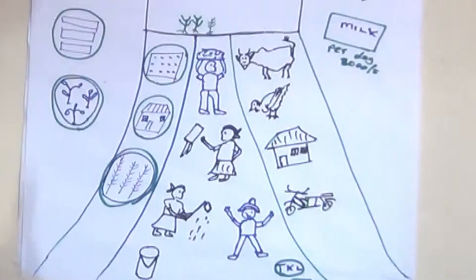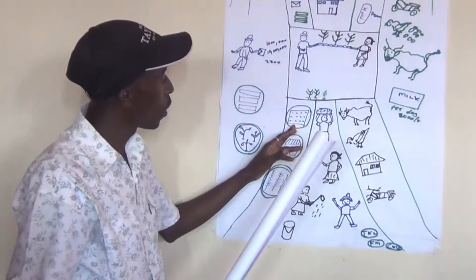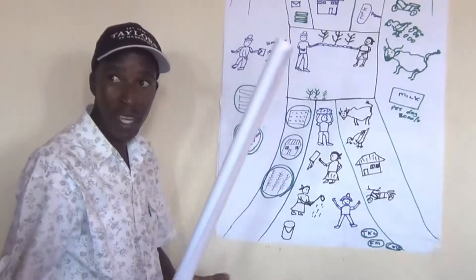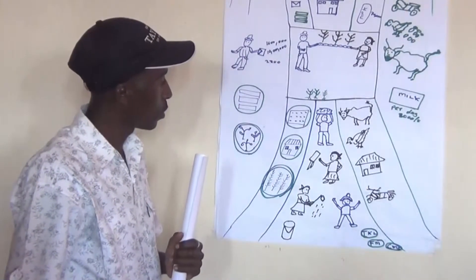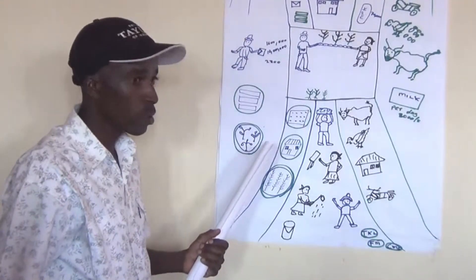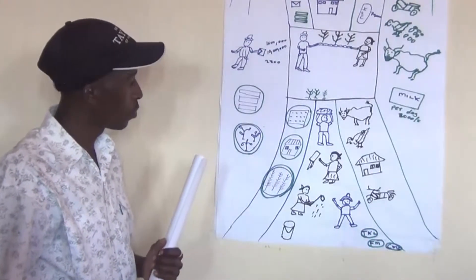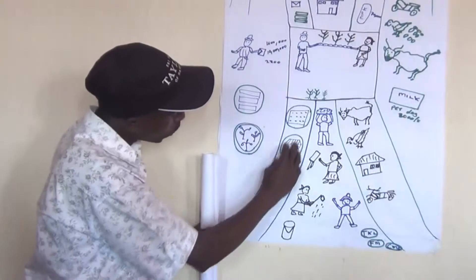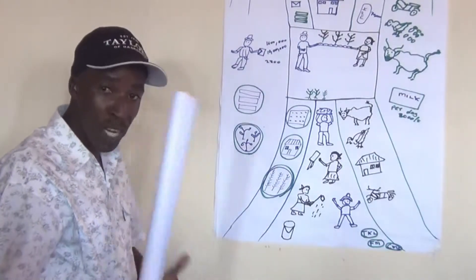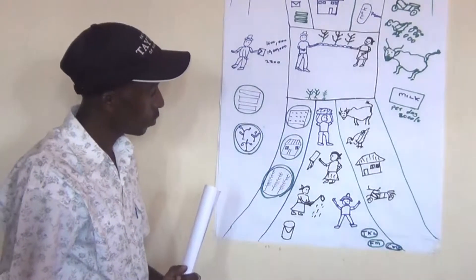In the roots you will show the activities and work that you are doing. On the left hand side of the roots you will show the fixed resources — for example, a lot, a house, a forest, etc.